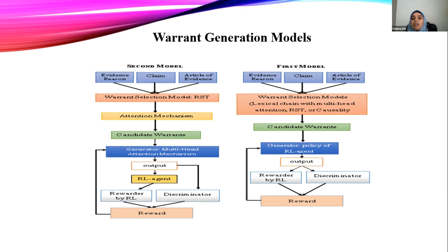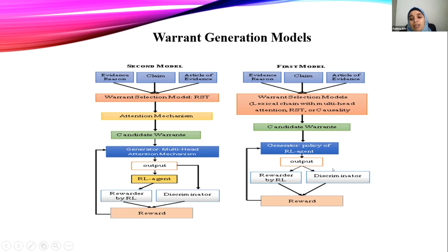The three methods are: first, lexical chain with multi-head attention; second, rhetorical structure theory; and third, causality-based selection. After retrieving the most relevant information, the output is a candidate warrant. Then we apply reinforcement learning — the RL agent acts as a generator to generate a plausible warrant. We enhance the performance using a reward function. This is the first model.